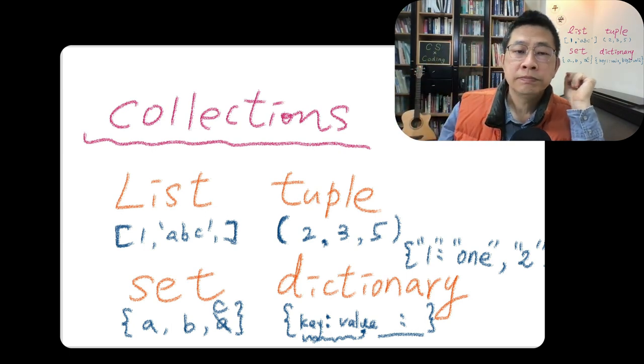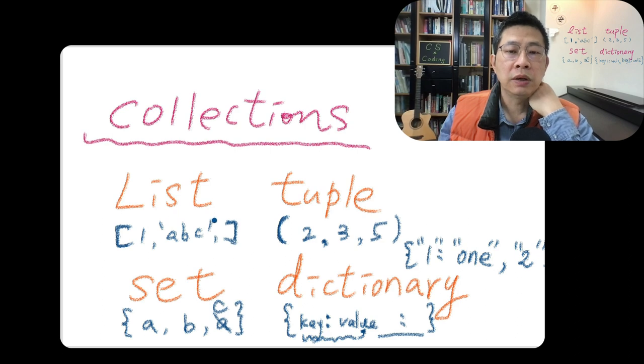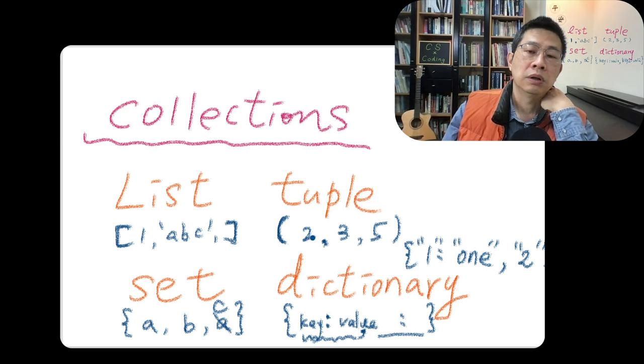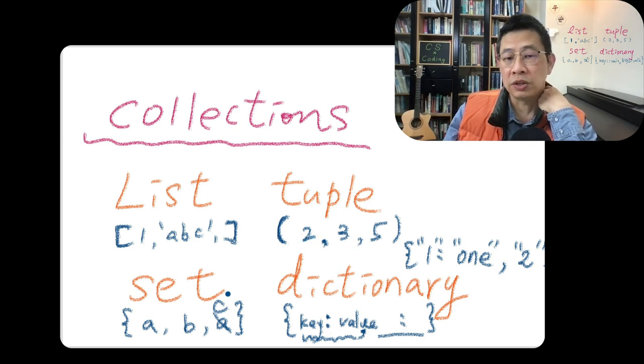And some features of this collection, their behavior is a little bit similar, but they also have unique features. For example, we cannot change the order of the tuple. We cannot change the order of the set. We cannot update. If we define the tuple, we cannot update it. It's immutable. Set is immutable. And a list is mutable, which means you can change the element. Dictionary, etc.